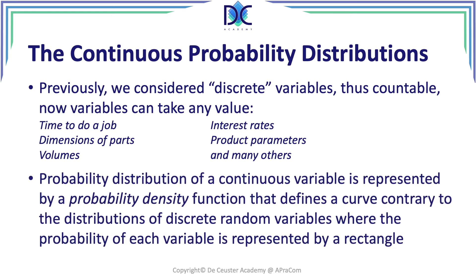When we have a continuous variable, we have what we call a probability density function. It defines a continuous curve, contrary to the distribution of discrete random variables, where the probability of each variable is represented by a rectangle.